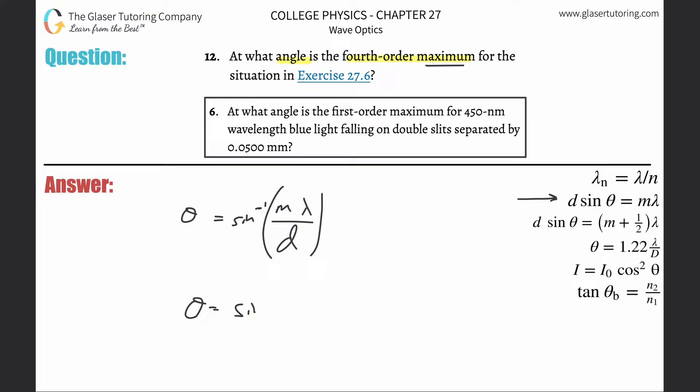And now we just have to plug in the values. So the inverse sine of the fourth order max, so it's going to be four multiplied by the wavelength, and it was 450 nanometers, so that's 450. You need it in meters, so multiply that by 10 to the minus ninth, then divide it by the distance between the slits, which they told us was 0.05, but that's in millimeters. You need that in meters, so multiply it by 10 to the minus three, then take out the calculator and plug it in.